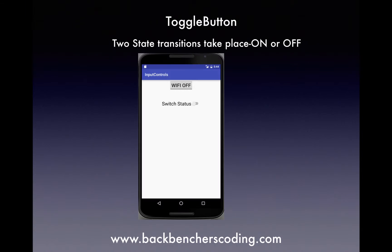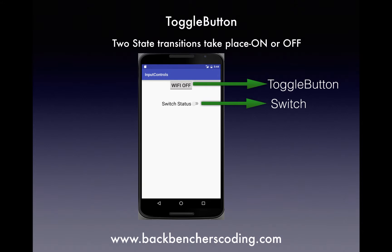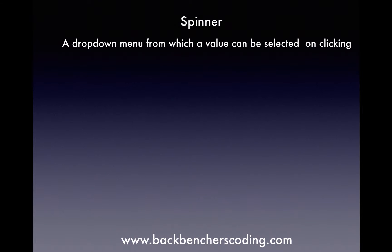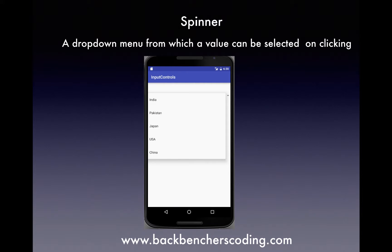Next we have toggle button. It has on and off state that can be used to initiate an action as well as change its previous state. With toggle button, we also have an alternative called switch which uses a similar concept — it differs only in design from toggle button. Next, we have spinner which is a composite control that displays a text view and an associated list view that lets you select an item from the list.